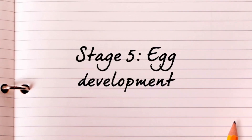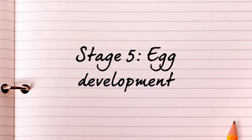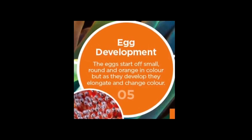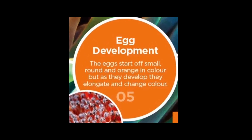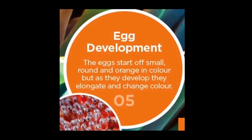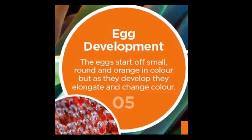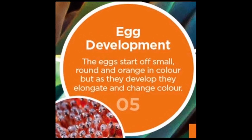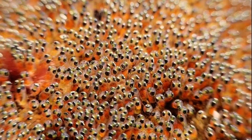Stage five is all about egg development. The eggs start off small, but they develop very quickly and start to change colour. They elongate and you can even see the eyes starting to form — they look a little bit weird.